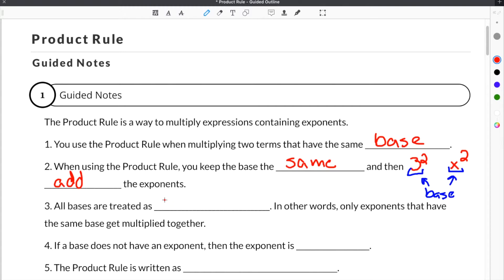All bases are treated as like terms. In other words, only exponents that have the same base get multiplied together. If you had 3 squared times 4 to the third times 3 to the fourth, only the terms with the same base could get multiplied together.